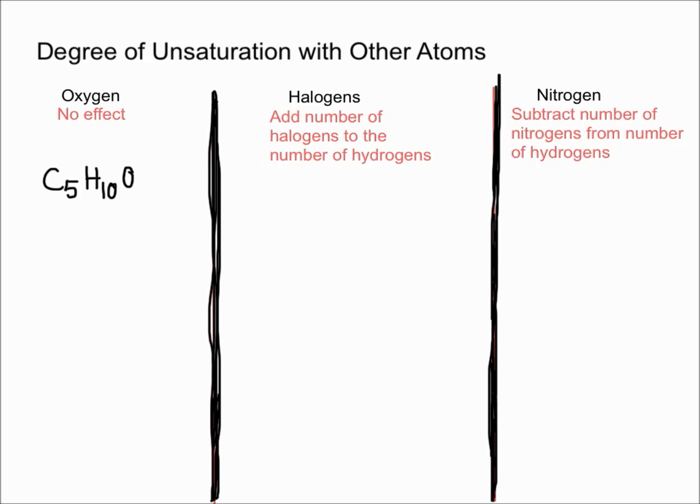First, let's start off with talking about oxygen. We're going to use this molecule for an example. When you have an oxygen atom, there is no effect on the degree of unsaturation. If you look at this molecule, C5H10O, it's going to be equivalent, when we're talking about degree of unsaturation, to C5H10, because the oxygen doesn't do anything. It has no effect on the degree of unsaturation.